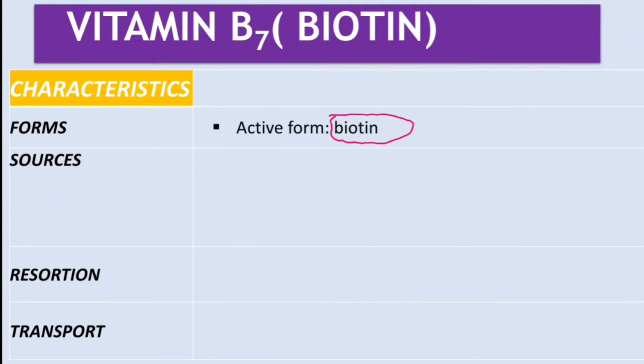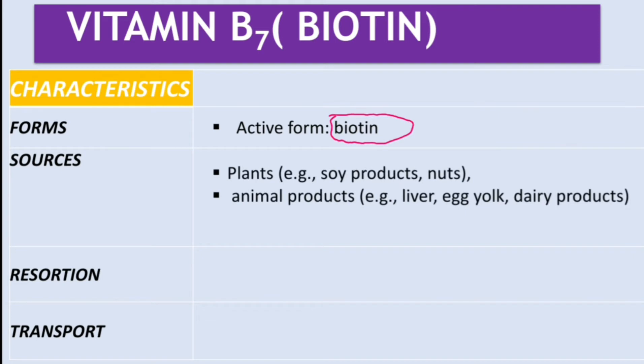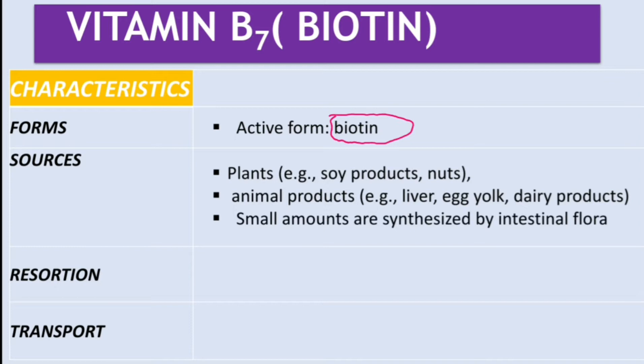The active form of this vitamin is simply biotin. As for sources, there are different types. Plant sources include soya products and nuts. Animal sources include animal products like liver, egg yolk, and dairy products.